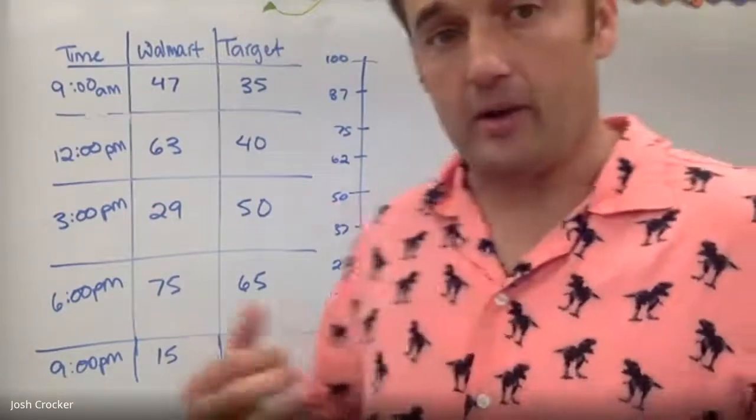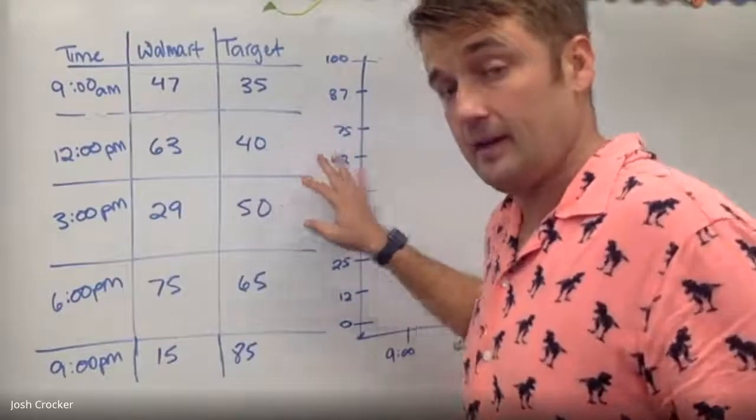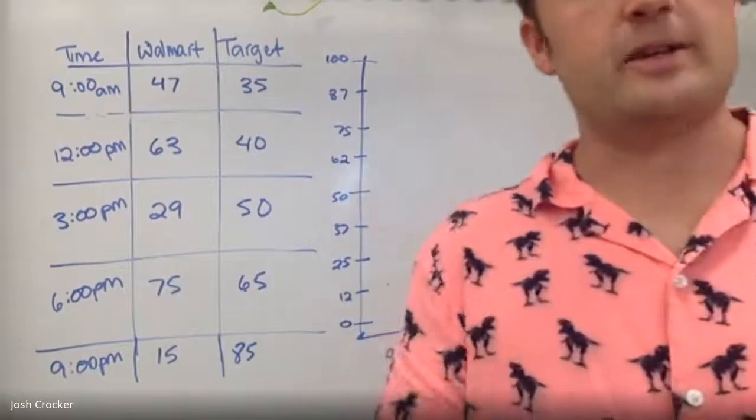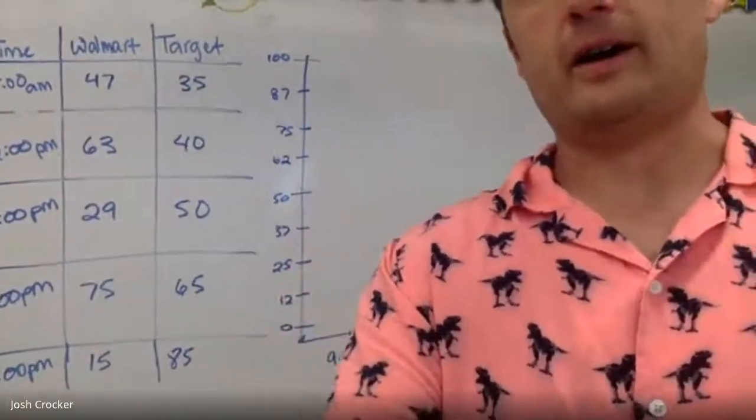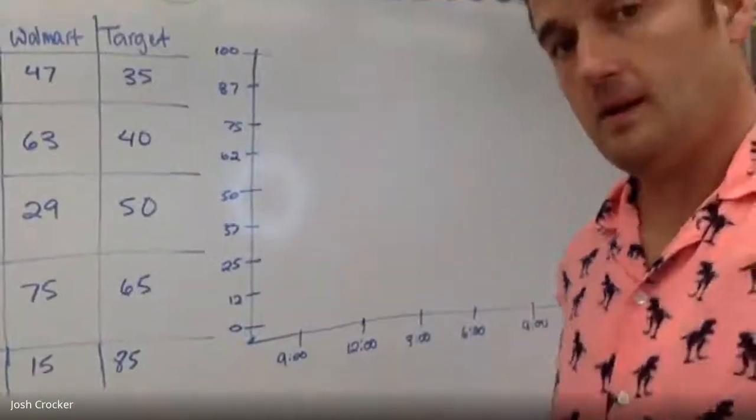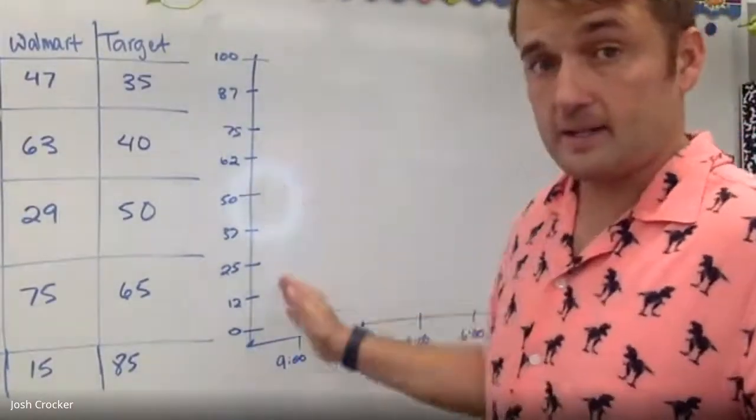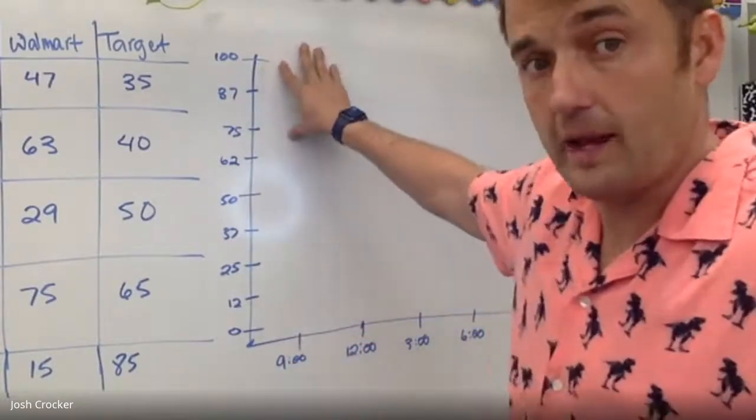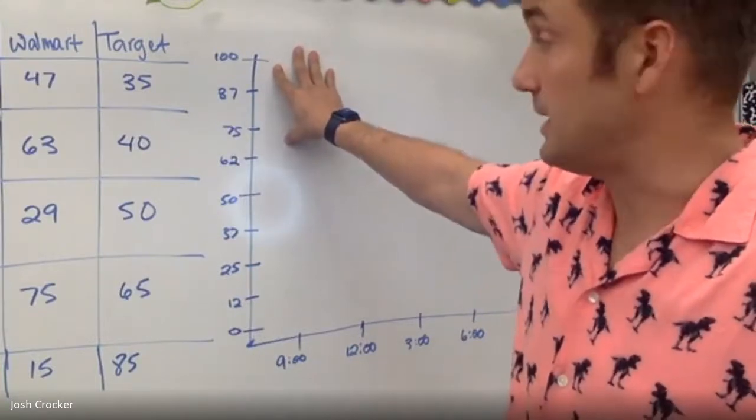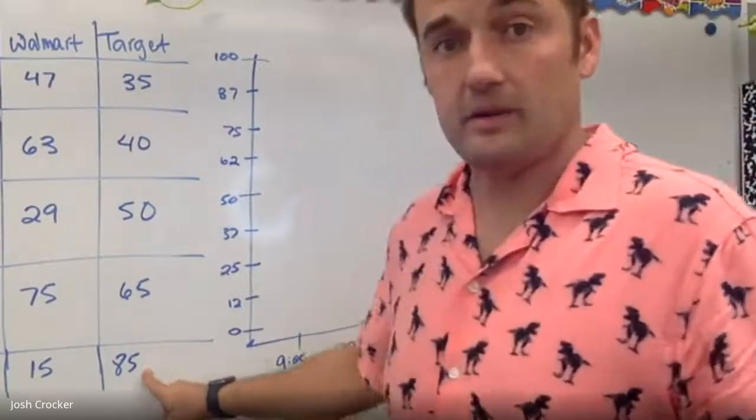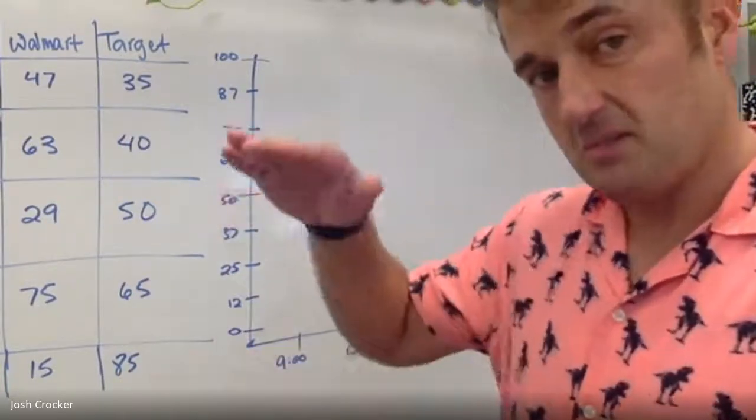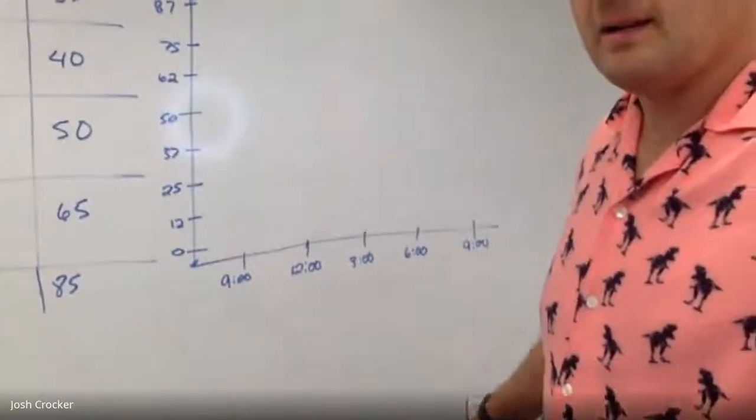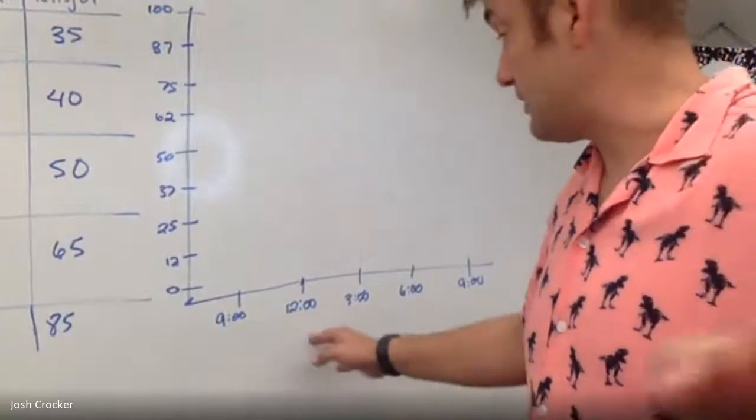So now I'm going to take my data that I have here and I'm going to chart it. I'm going to graph it. So if we slide over here and we look at my graph, on the vertical axis here I have numbers and these numbers show how many cars. I went all the way up to 100 because I have as many as 85 in my graph. I just thought 100 would be a good stopping point. And then along the bottom axis I have times. 9, 12, 3, 6, 9.